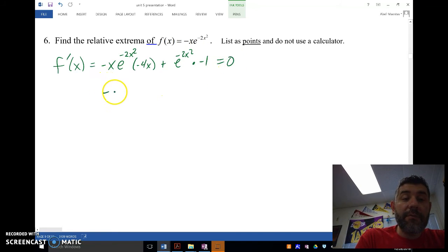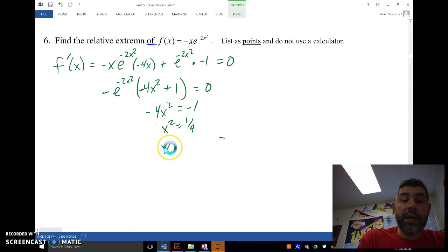And what I'm going to do is factor out a negative e to the negative 2x squared from each of these. So that gives me 4x squared minus 1 equals zero. It gives me negative 4x squared plus 1, and that's going to give me negative 4x squared equals negative 1, x squared equals one fourth, so x equals plus or minus one half.